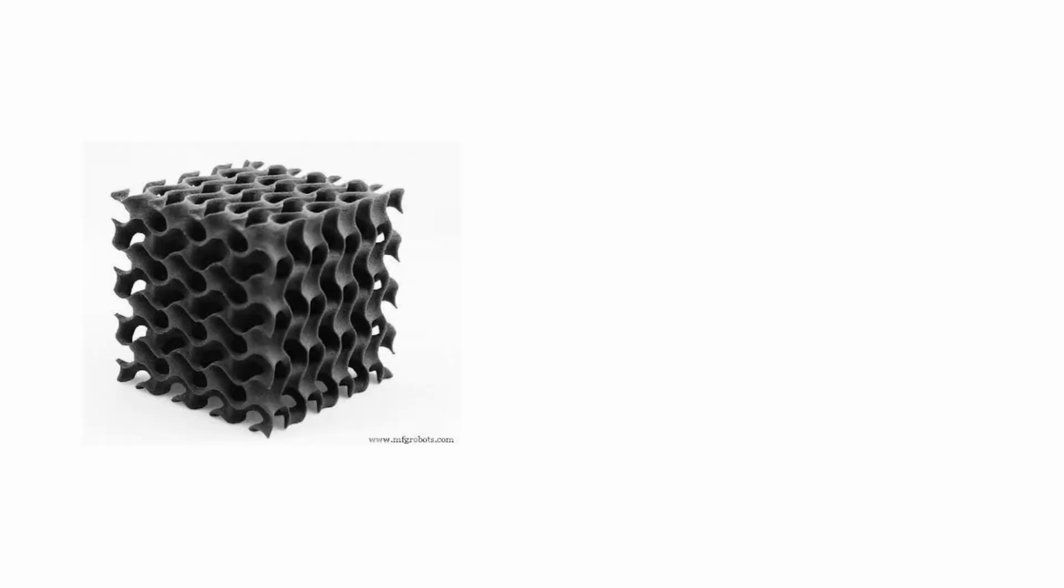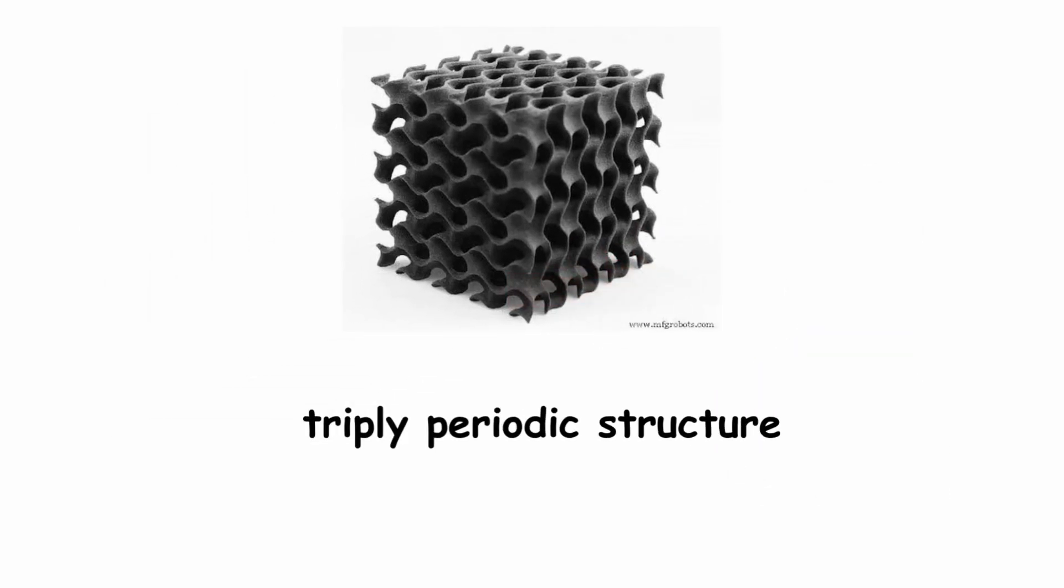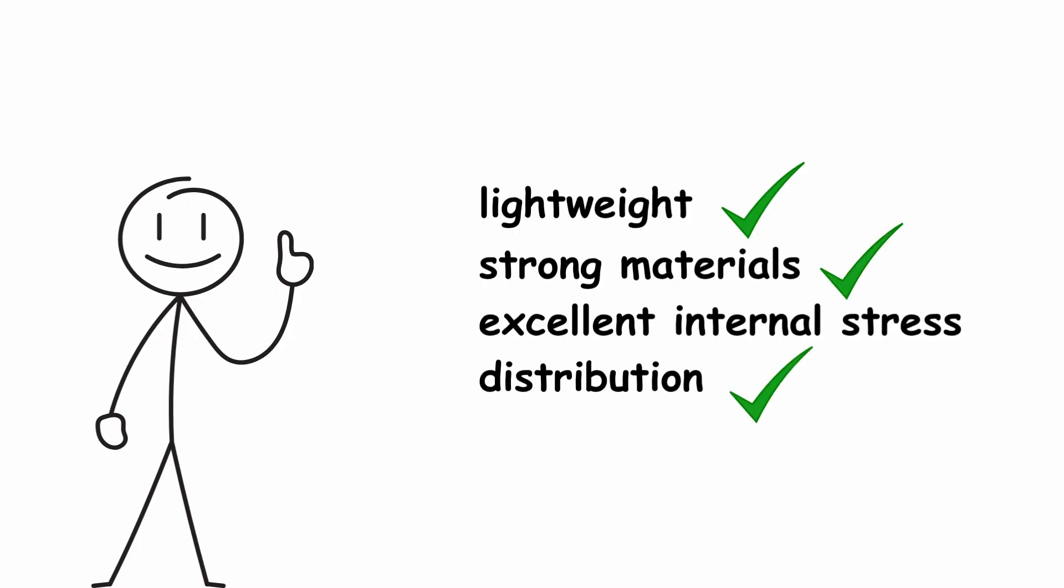In particular, gyroids, discovered by Alan Schoen, have a triple periodic structure without flat surfaces or sharp edges, making them ideal for lightweight, strong materials with excellent internal stress distribution.